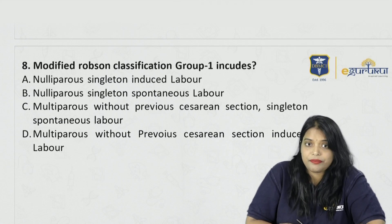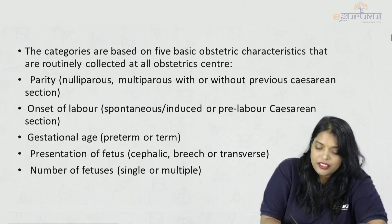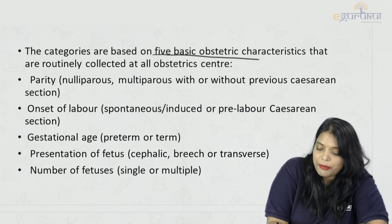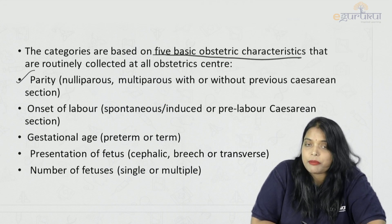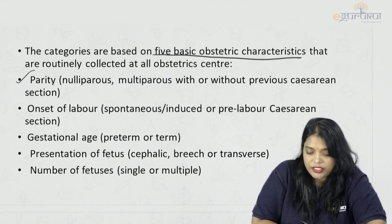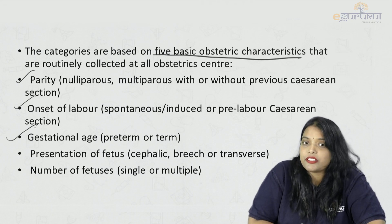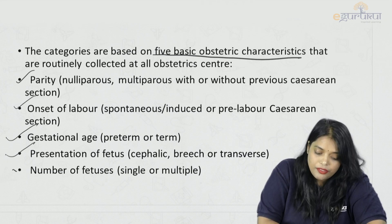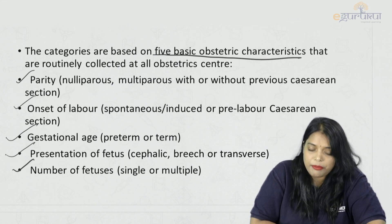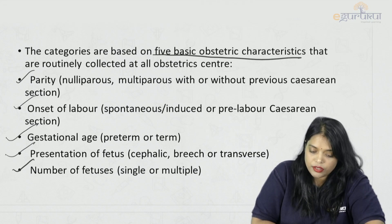It has 10 classes. These categories are mainly based on 5 basic obstetric characteristics: parity — whether nulliparous or multiparous, with or without previous cesarean section; onset of labor — whether spontaneous or induced; gestational age — whether preterm or term; presentation of the fetus — whether cephalic, breech, or transverse; and number of fetuses — whether single or multiple.